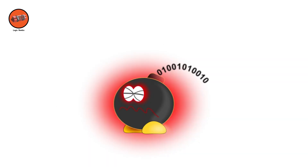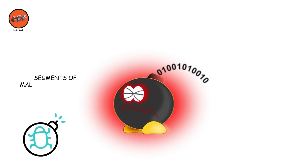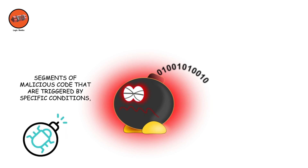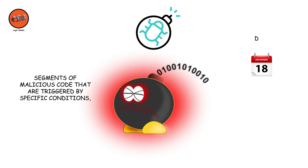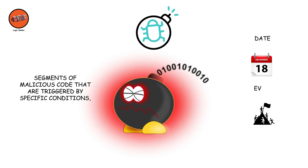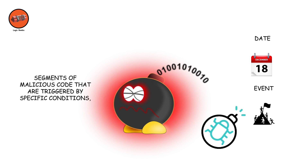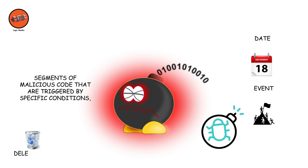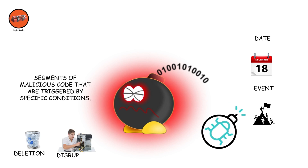Logic bombs. Logic bombs are segments of malicious code that are triggered by specific conditions, such as a particular date or event. Once triggered, they can perform various harmful actions, such as deleting files or disrupting system functionality.